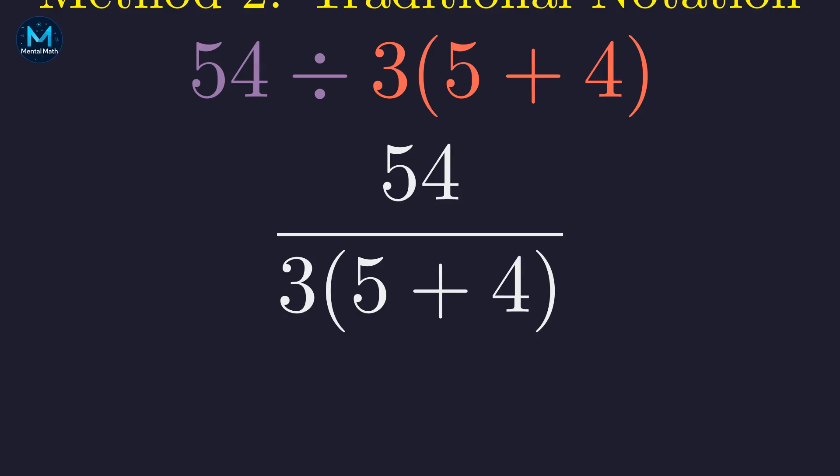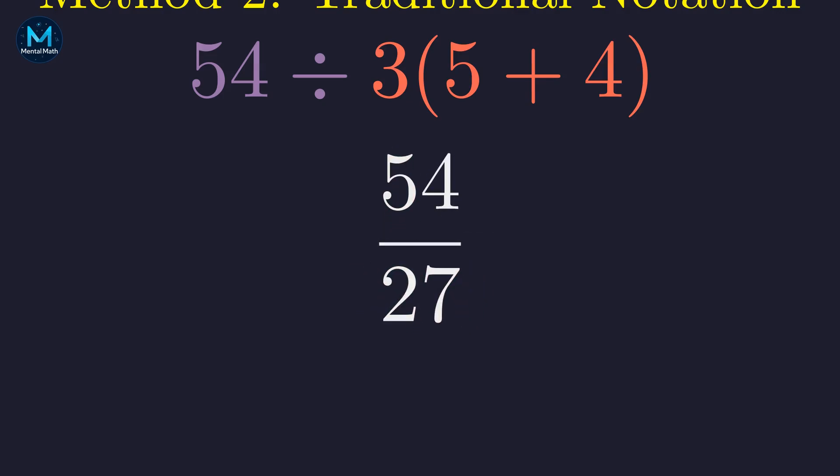Written as a fraction, it looks like this. Now, there's no ambiguity about what needs to happen first. We still handle the parentheses first, getting 9. Now we evaluate the entire denominator. 3 times 9 is 27. And we get 2.